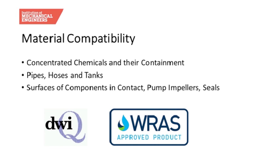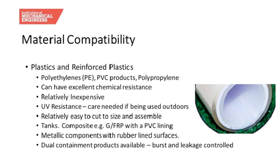With regard to compatibility, the primary considerations are the internal surfaces of pipes, hoses and storage tanks. We also need to think carefully about items that might have smaller contact areas but are nonetheless important — pump internals, seals and seating materials. Plastic materials are often the automatic choice with concentrated chemicals. They are generally inert and resistant to attack from the sort of chemicals used in water treatment, relatively easy to work with, solvent welded or screwed, and various types of plastic valve are also manufactured.